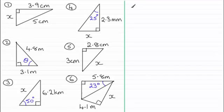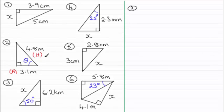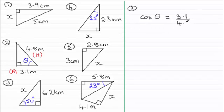In number two we've got to find the angle theta. Thinking about the two sides we have in relation to theta: this is the adjacent side, and the side opposite the right angle is the hypotenuse. The trigonometric ratio connecting adjacent and hypotenuse is the cosine ratio: cosine of an angle equals adjacent over hypotenuse. So cos θ = 3.1 ÷ 4.8, which gives 0.6458...